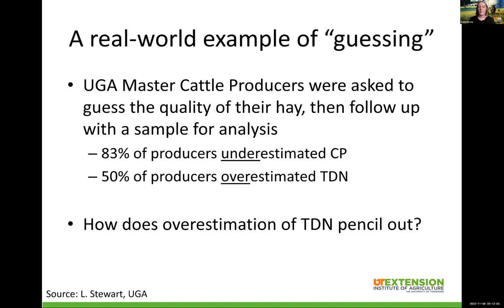I use this example from the UGA Master Cattle Producer Program to drive home why we shouldn't guess forage quality. They asked producers to bring in a hay sample, and when they turned it in, they had them guess the crude protein and the energy content or TDN. Then they analyzed that forage and compared results to what the producers guessed. They found that 83% of producers underestimated crude protein, and 50% overestimated TDN. So basically, they didn't think they had enough protein, and close to a majority thought they had enough energy.